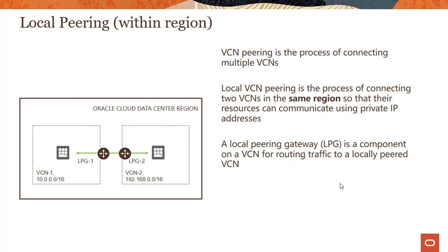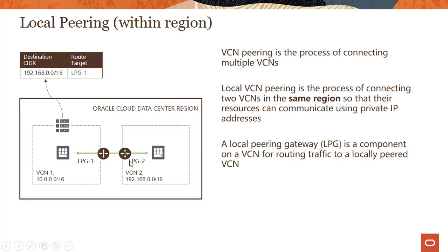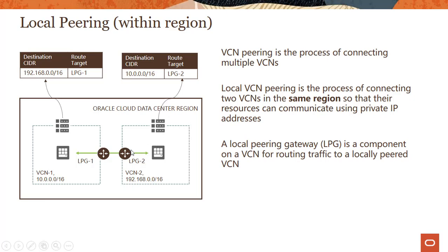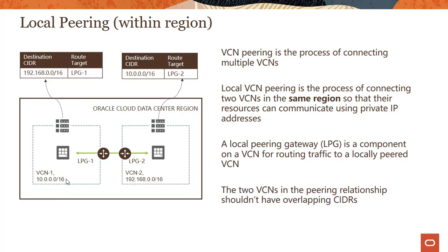How does this work? We create a local peering gateway which routes traffic between the two VCNs. A local peering gateway gets created on each individual VCN, and once created you have to specify the routes for IP packets. For this VCN the target is 192.168.0.0/16, and for the other VCN the local peering gateway target is 10.0.0.0/16. You also need to open the virtual firewalls to let traffic in between the VCNs.